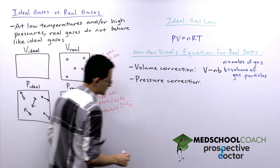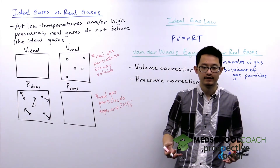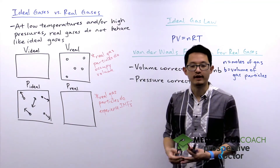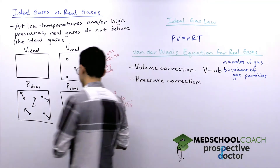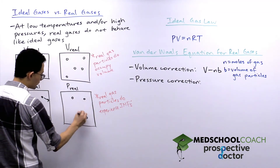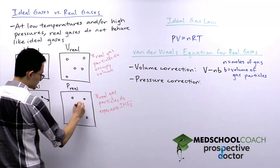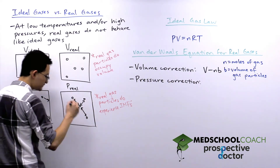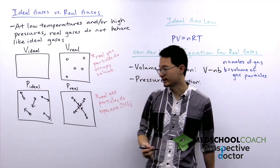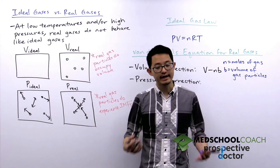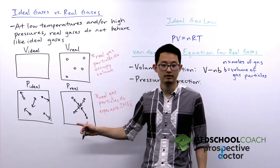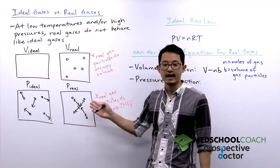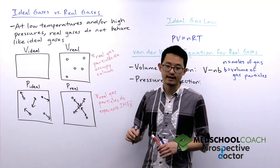Intermolecular forces are all attractive, which means gas particles don't just move around independently of each other — they can interact with each other. As a consequence, gas molecules attracted to each other don't collide as frequently with the walls of the container and have a tendency to clump up in the middle. This means that real gases have a lower pressure than ideal gases.